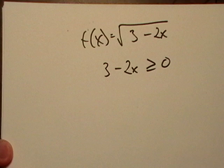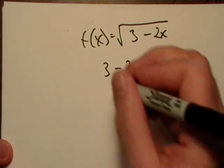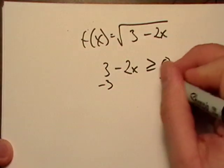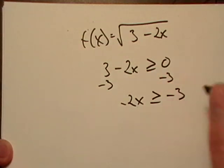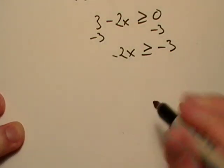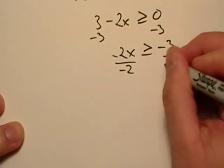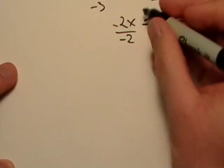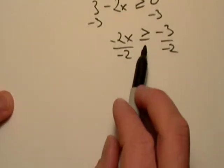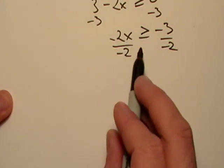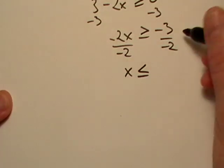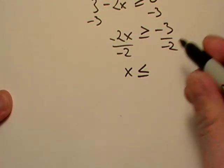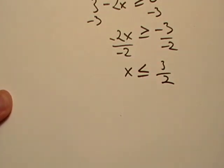We'll set it equal to 0, or greater than or equal to 0. I'm going to have to subtract 3 from both sides. So negative 2x is greater than negative 3. I don't like these negatives, so I'm going to divide the negative 2s out. And remember, when we divide by negatives, we have to flip the sign around. So, and then a negative divided by a negative is a positive.